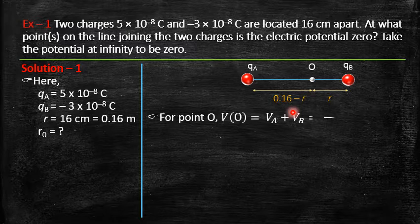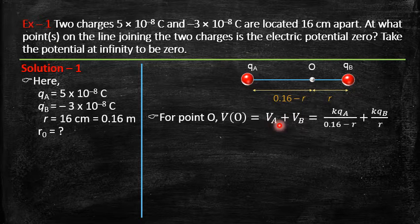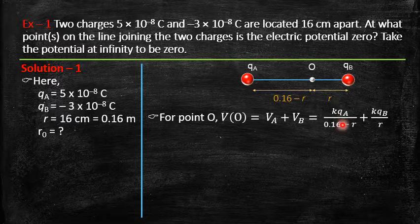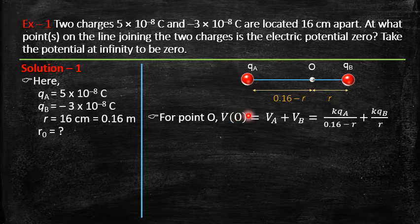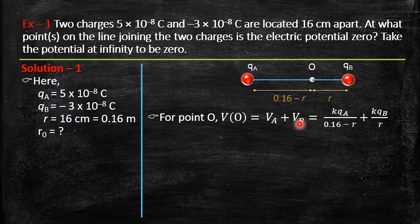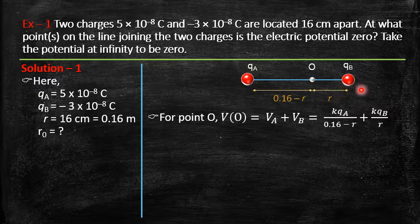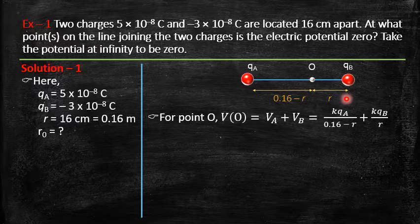At point O, the total potential is V_A + V_B. Potential due to A is kq_A/(0.16 − r) and potential due to B is kq_B/r. We want the potential at O to be zero, so set V(O) = 0. This gives one unknown r, which you can solve to find the distance from q_B at which potential is zero. Note that r is measured from charge B.